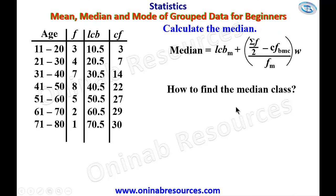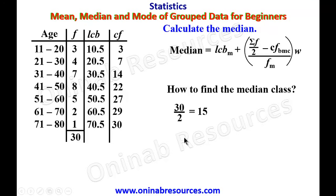To find the median class, we divide the total frequency 30 by 2, which gives 15. We look at the cumulative frequency column for the value just greater than 15 — that is 22. So the class interval corresponding to cumulative frequency 22, which is 41 to 50, forms the median class. From this we obtain the lower class boundary, the cumulative frequency before the median class, the frequency of the median class, and the class width.